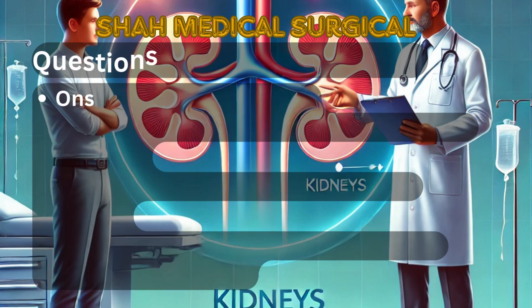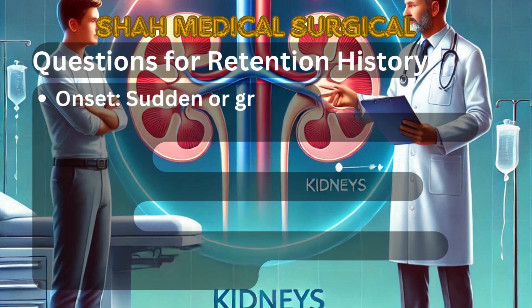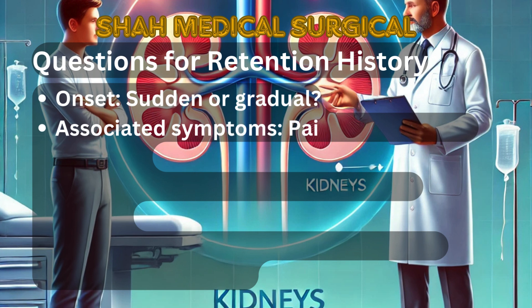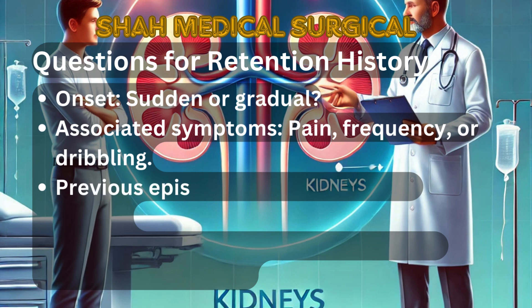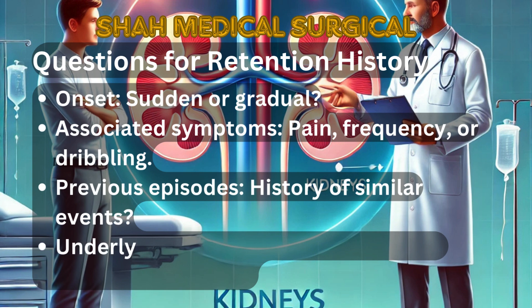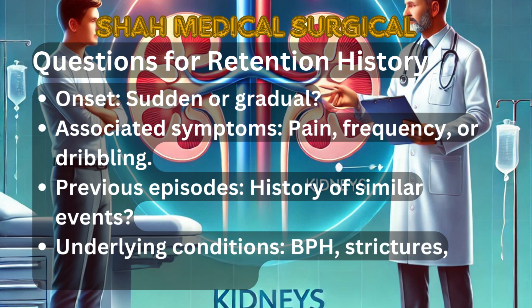History taking for urinary retention. When taking a history for urinary retention, focus on: 1. Onset — is it sudden or gradual? 2. Associated symptoms — is there pain, frequency, or dribbling? 3. Previous episodes — has the patient experienced similar events before? 4. Underlying conditions — conditions like BPH, strictures, or neurogenic bladder should be explored.